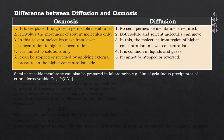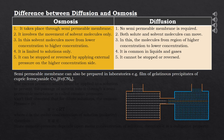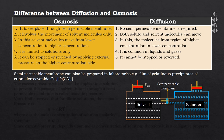To understand osmotic pressure, consider an apparatus with two vessels connected by a semi-permeable membrane, each fitted with watertight frictionless pistons. Pure solvent is placed in the left compartment and concentrated solution in the right compartment. Due to osmosis, solvent flows into the solution compartment, and the piston on the solution side tends to move outwards. To stop this movement, we must apply pressure on the solution side.